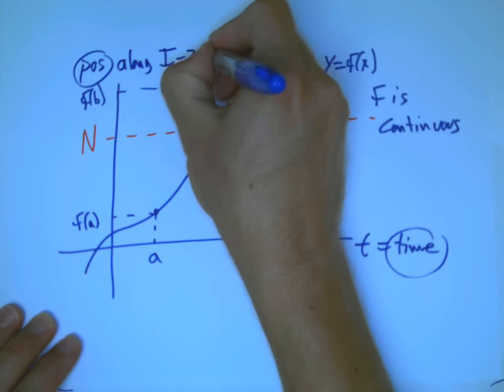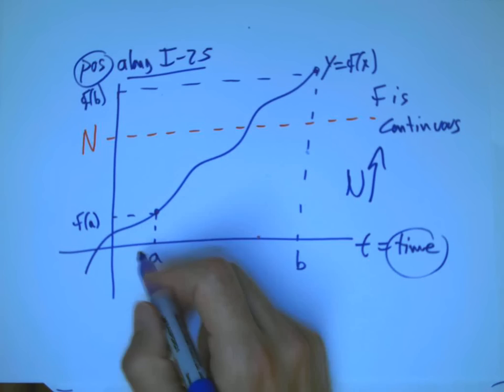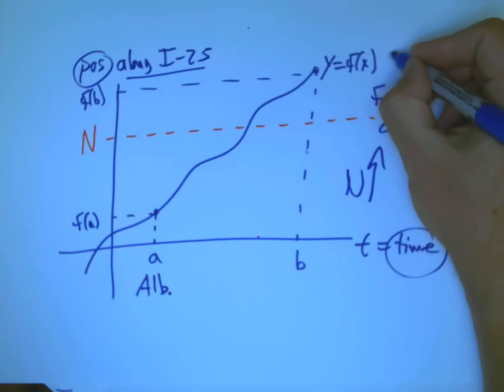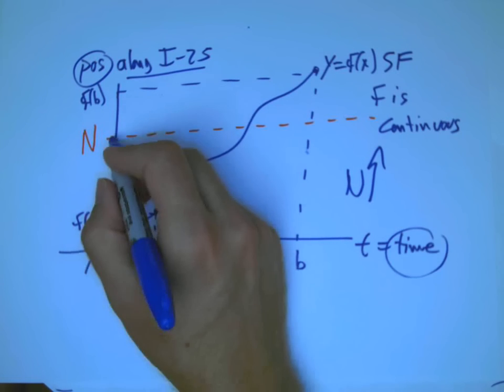Then this is one of our familiar graphs of position as a function of time. And let's say this is along position along interstate 25, and north is going this way.